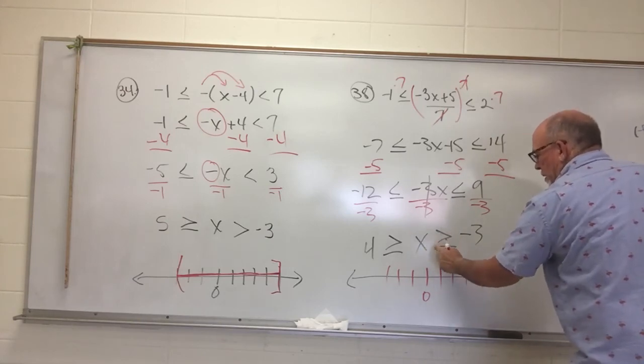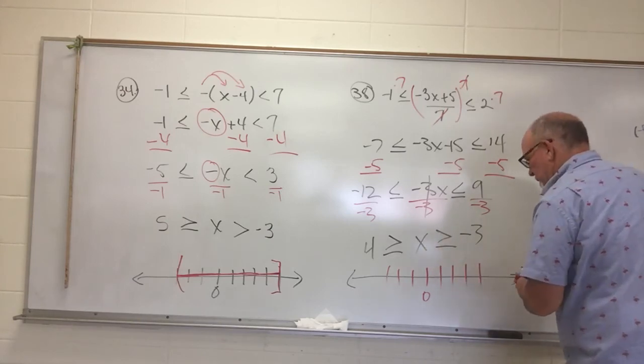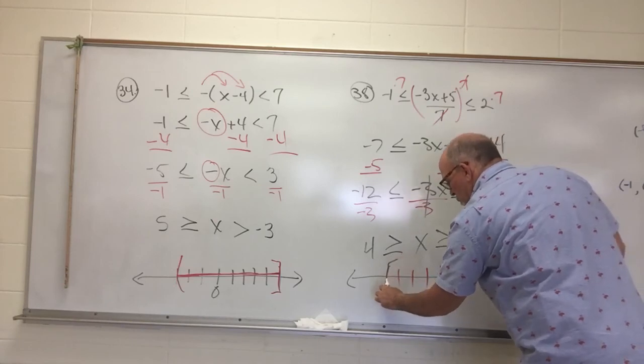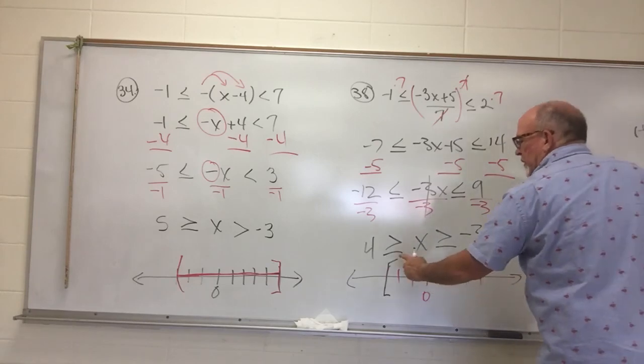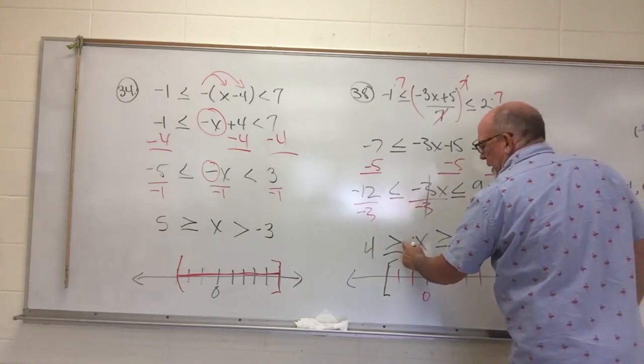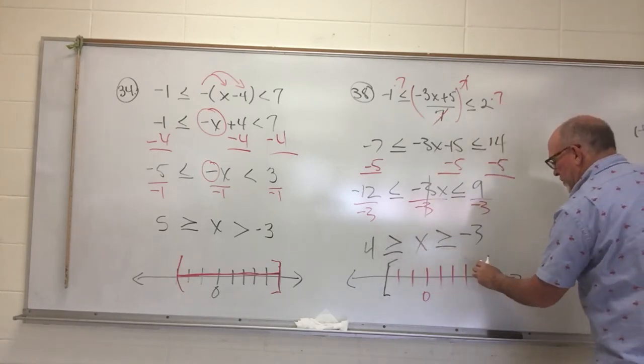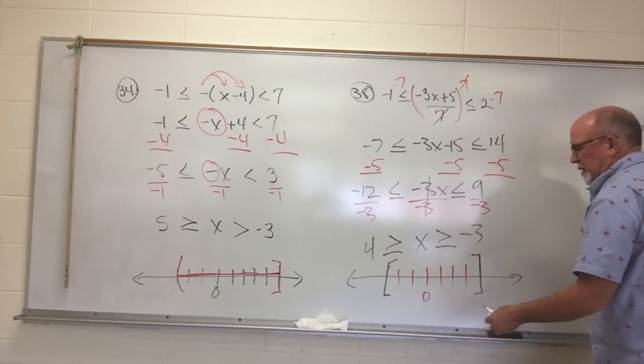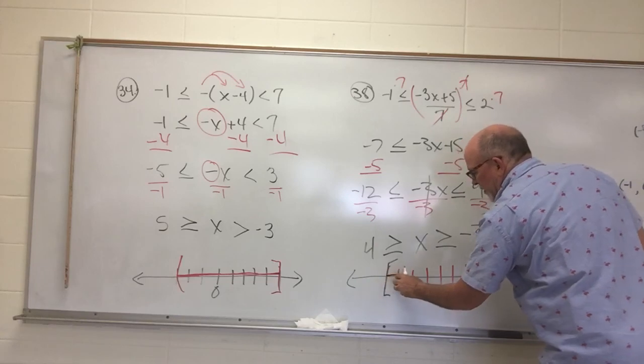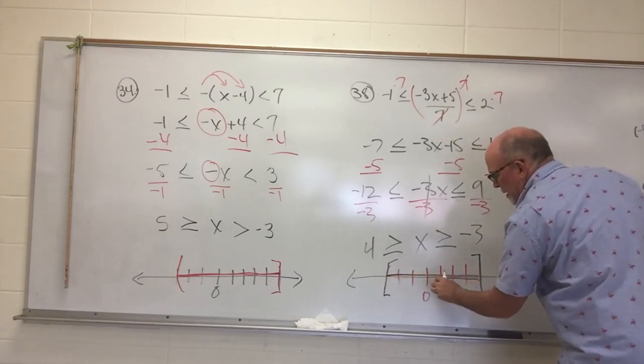X is bigger than negative 3. It's also equal to negative 3. So I've got a square bracket or a filled-in hole, however you choose to do it. Then I've got x is smaller than 4. So I'm going out to 4. It's also equal to 4. So I'm putting square bracket or a filled-in point. And then it's everything in between.